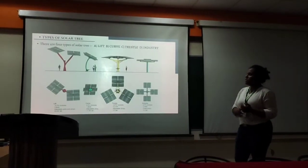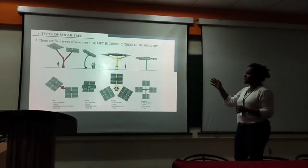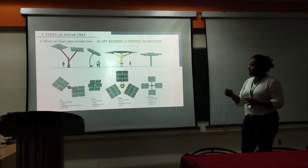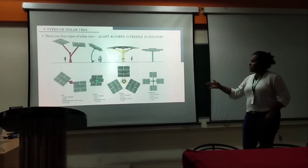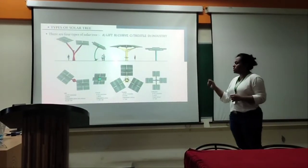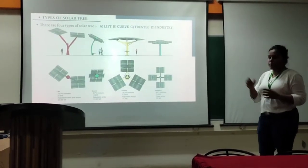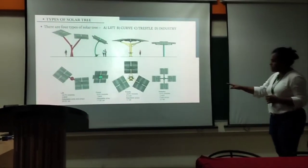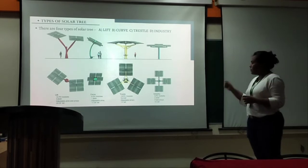There are four types of solar tree. First is the Lift type, second is Curve, third is Vessel, and fourth is Industry. The Lift tree has 12 PV modules with 3.6 kilowatt power, has an adjustable array and arms, and is 20 to 25 meters tall. The Curve tree has 6 PV modules with 1.8 kilowatt power, has an adjustable array, and is 17 to 20 meters tall. The Vessel has 18 PV modules with 5.4 kilowatt power, has an adjustable array, and is 15 meters tall. The Industry type has 8 PV modules with 2.4 kilowatt power, has a fixed non-modular array, and is 30 meters tall.